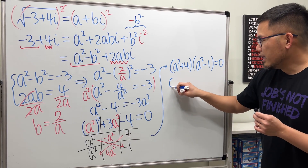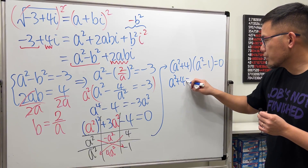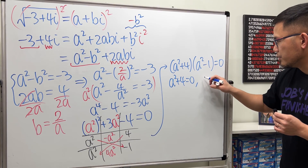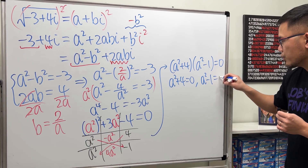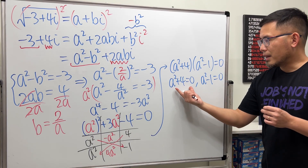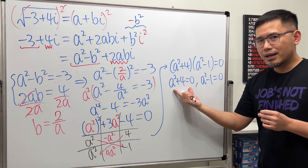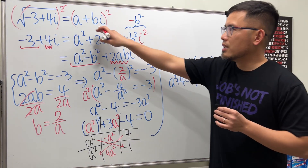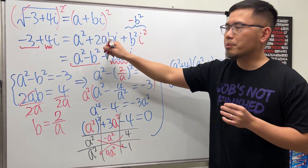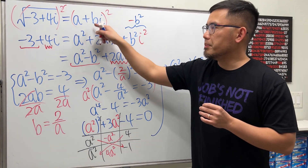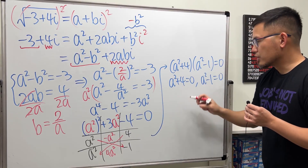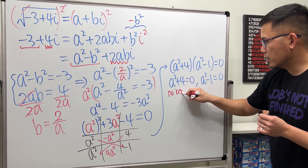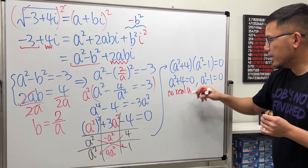So a squared plus 4 equals 0, or a squared minus 1 equals 0. The first equation has no real solutions, and since a must be a real number in our a plus bi form, we discard it.